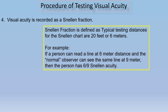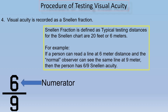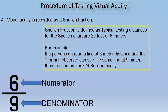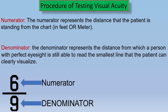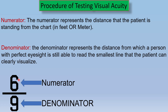In 6/9 visual acuity, there is a numerator and a denominator. The numerator represents the distance that the patient is standing from the chart in feet or meters — that is, the patient's distance from the target. The denominator represents the distance from which a person with perfect eyesight is still able to read the smallest line that the patient can clearly visualize — meaning a person with no refractive error.